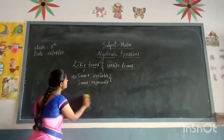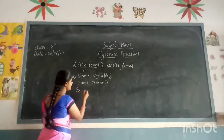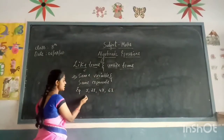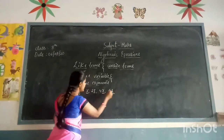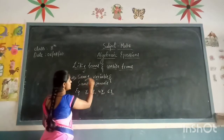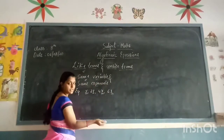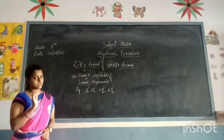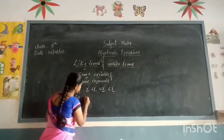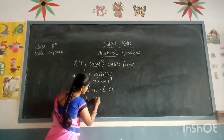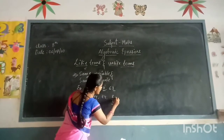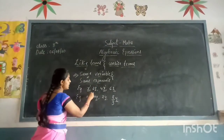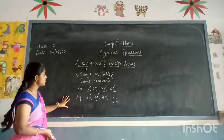A better example for like terms: x, 2x, 4x, 6x — here they have the same variable and the exponent is also 1 for all of them, so they are called like terms. Another example: 3x, 4x, 7x, 8x, 3x — all are called like terms because they have the same variable and the exponent is also 1.